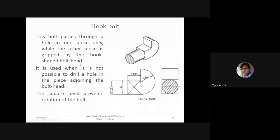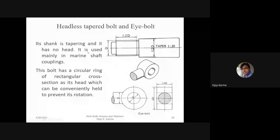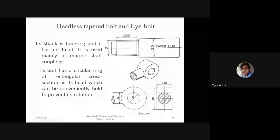The headless tapered bolt has a tapering shank and no head; it is used mainly in marine shaft couplings. The eye bolt has a circular ring of rectangular cross-section at its head, which can be conveniently held to prevent its rotation — a rod can be inserted through the ring to hold it while the nut is screwed on.